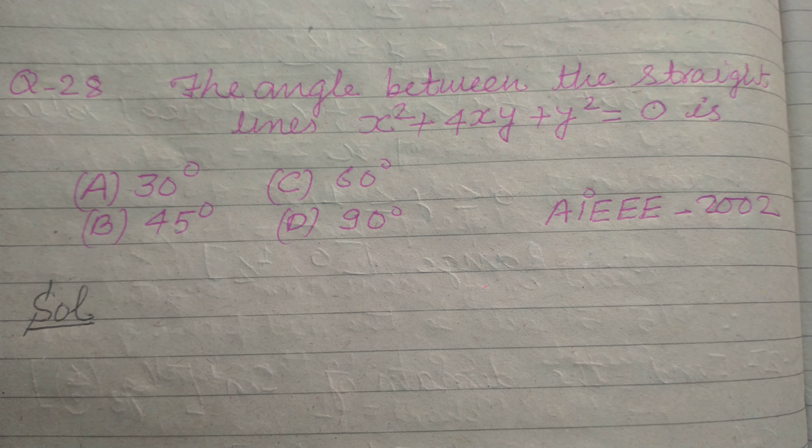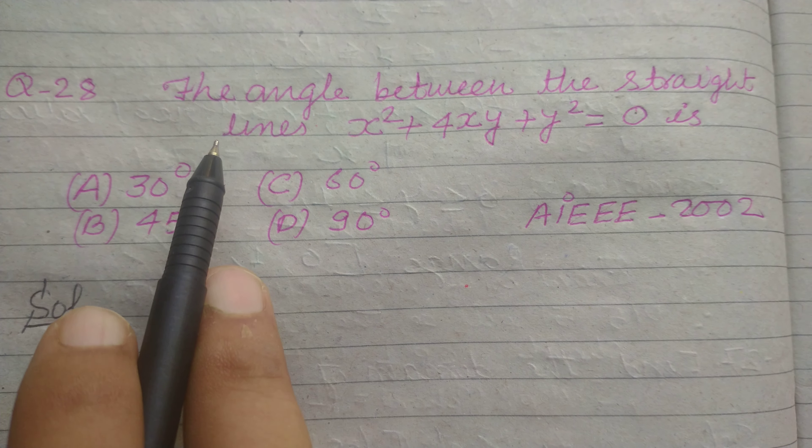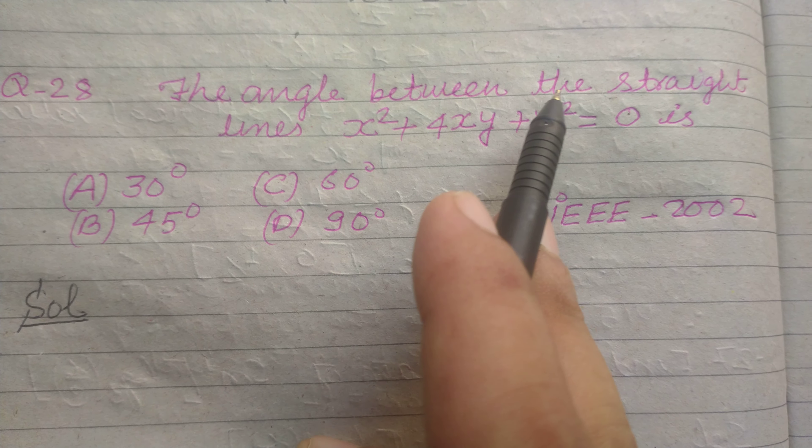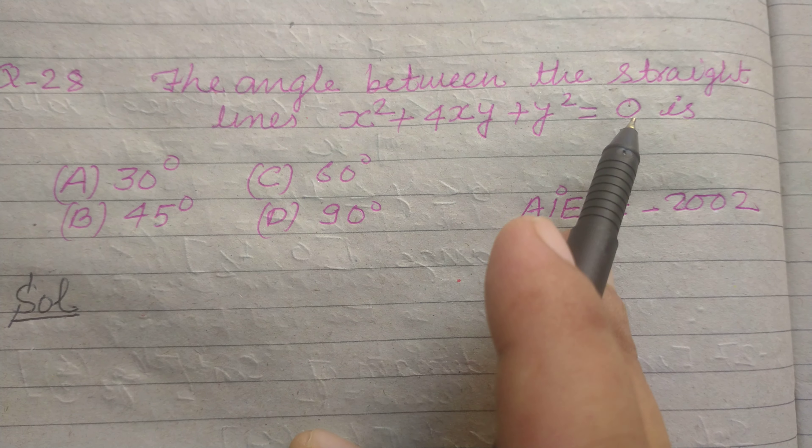Hello students, welcome to this YouTube channel. Here is a question from coordinate geometry. The angle between the straight lines x² + 4xy + y² = 0 is: